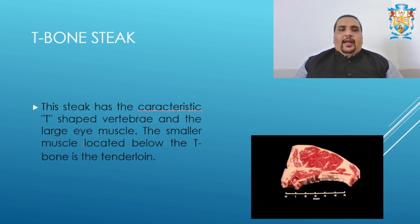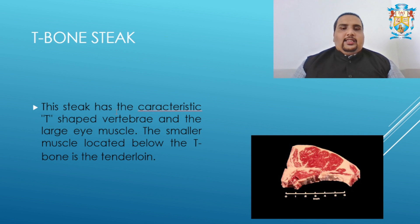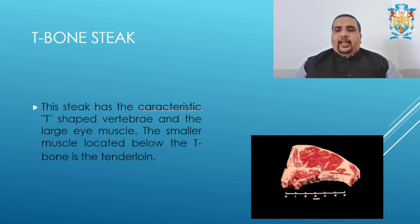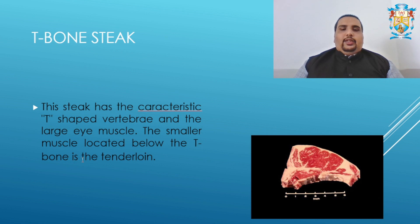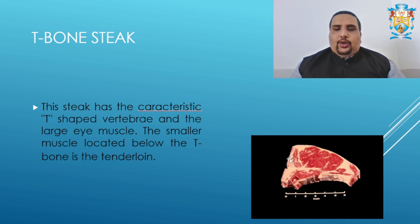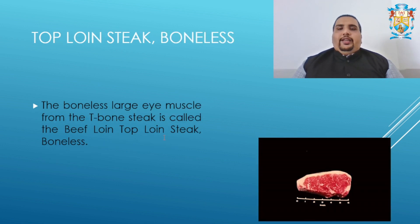The next one is the T-bone steak, which is a very famous steak. It has the characteristic T-shape vertebra and a large eye muscle. The smaller muscle located below the T-bone is the tenderloin — you can see a small muscle there. So you have one large eye muscle and a tenderloin muscle in this steak.